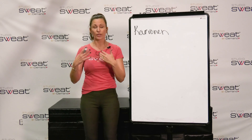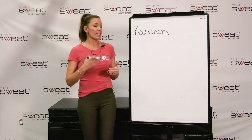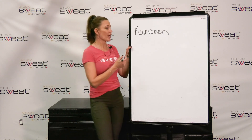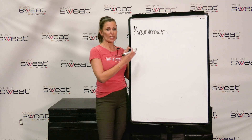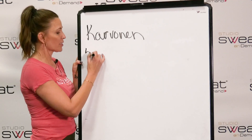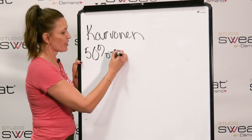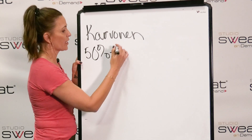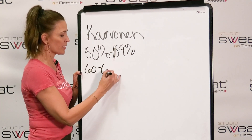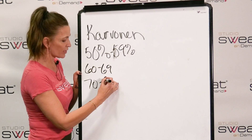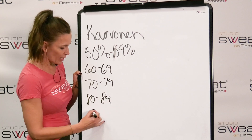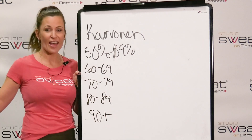What is a zone? A zone is how many beats per minute your heart rate is beating, and it's a percentage of your max. So there's 50 to 59%, then 60 to 69%, 70 to 79%, 80 to 89%, and then 90% plus.